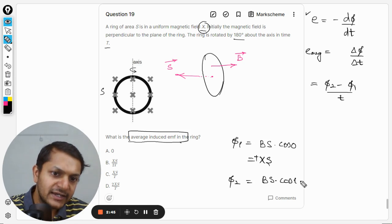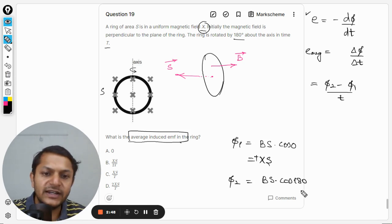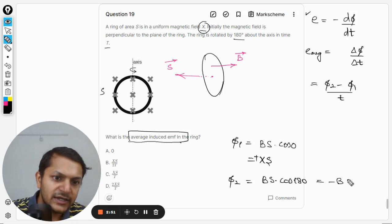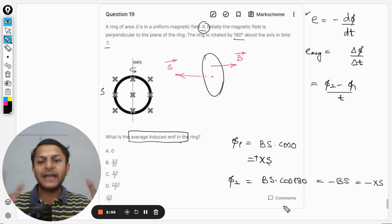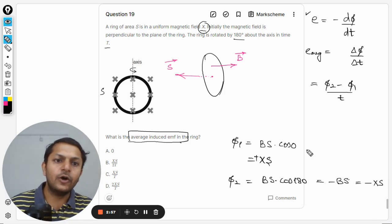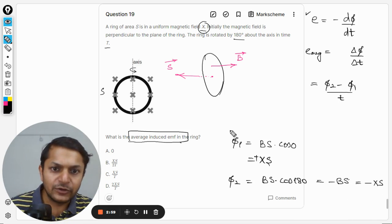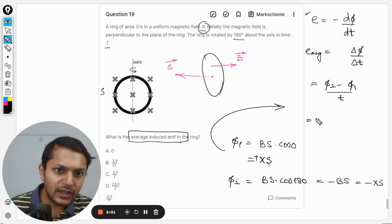This is the S vector. Clearly we can see that now the angle is 180 degrees, so this becomes B into S into cos 180. Cos 180 is negative, so it becomes minus BS, which can be written as minus XS because X is the magnetic field.